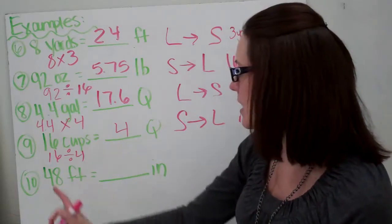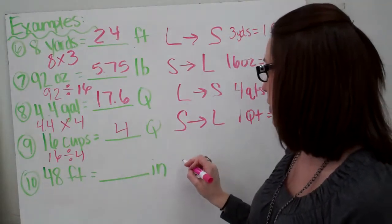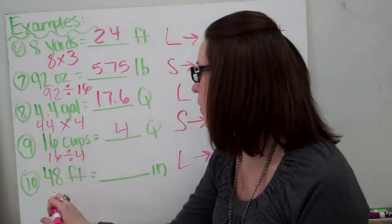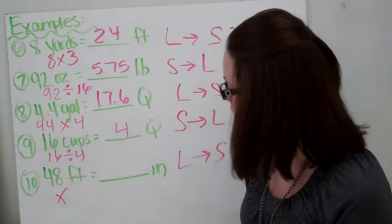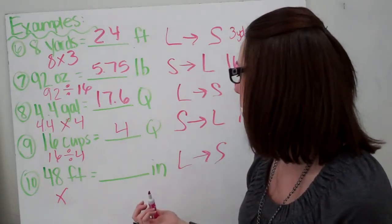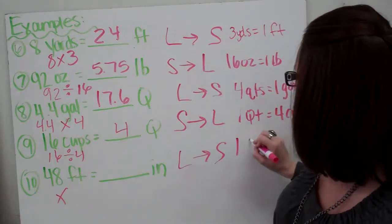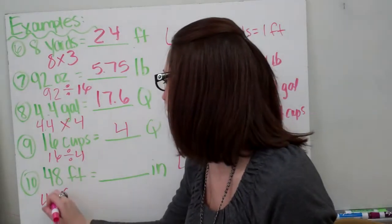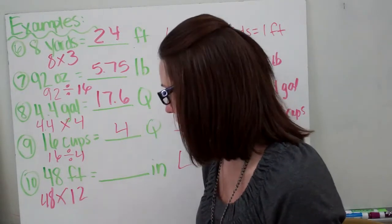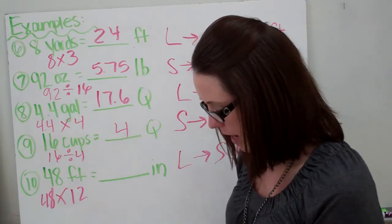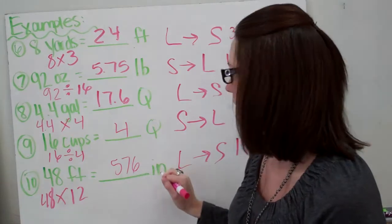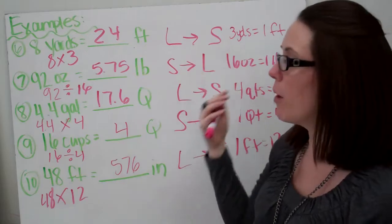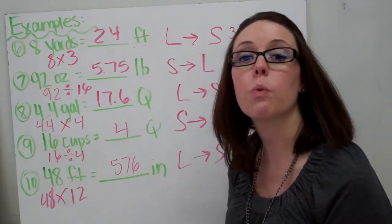Last but not least, 48 feet to inches — going from large to small, so we're going to multiply. In one foot there are 12 inches, so 48 times 12 is 576 inches. As you can see, when converting from large to small we multiply, and from smaller units to larger units we divide.